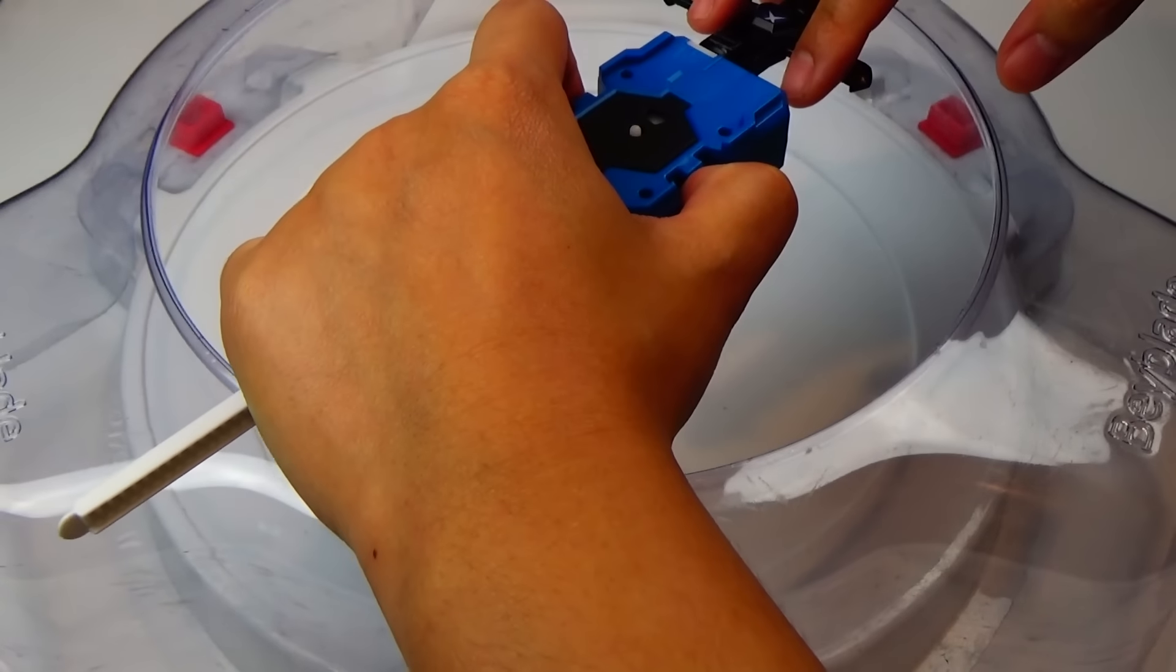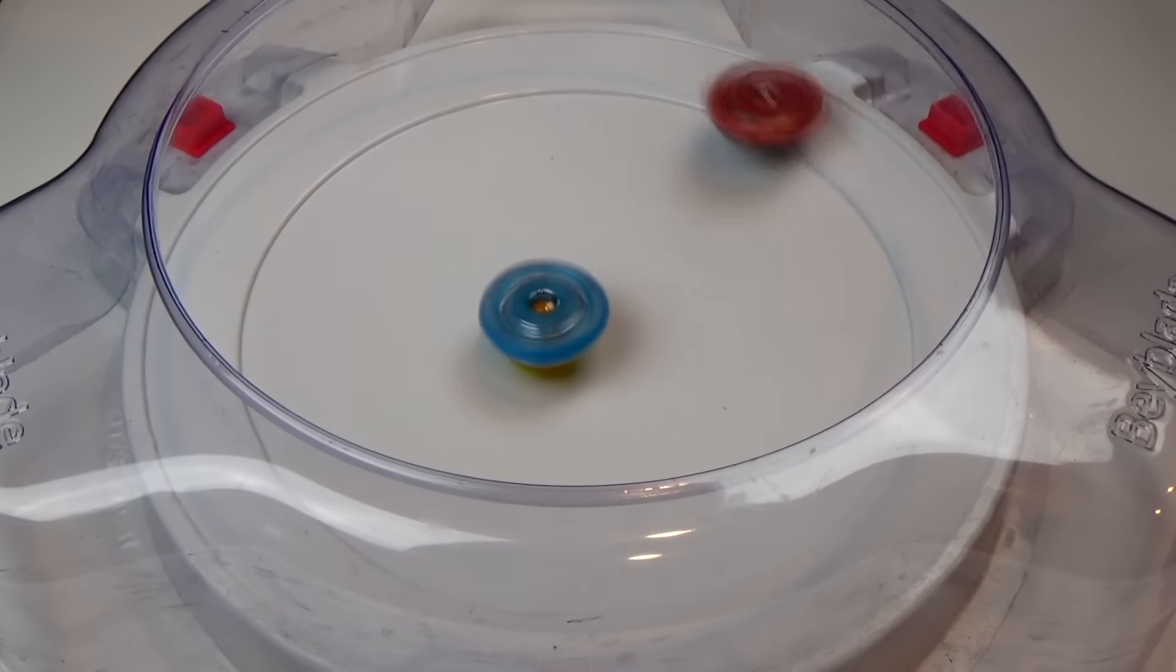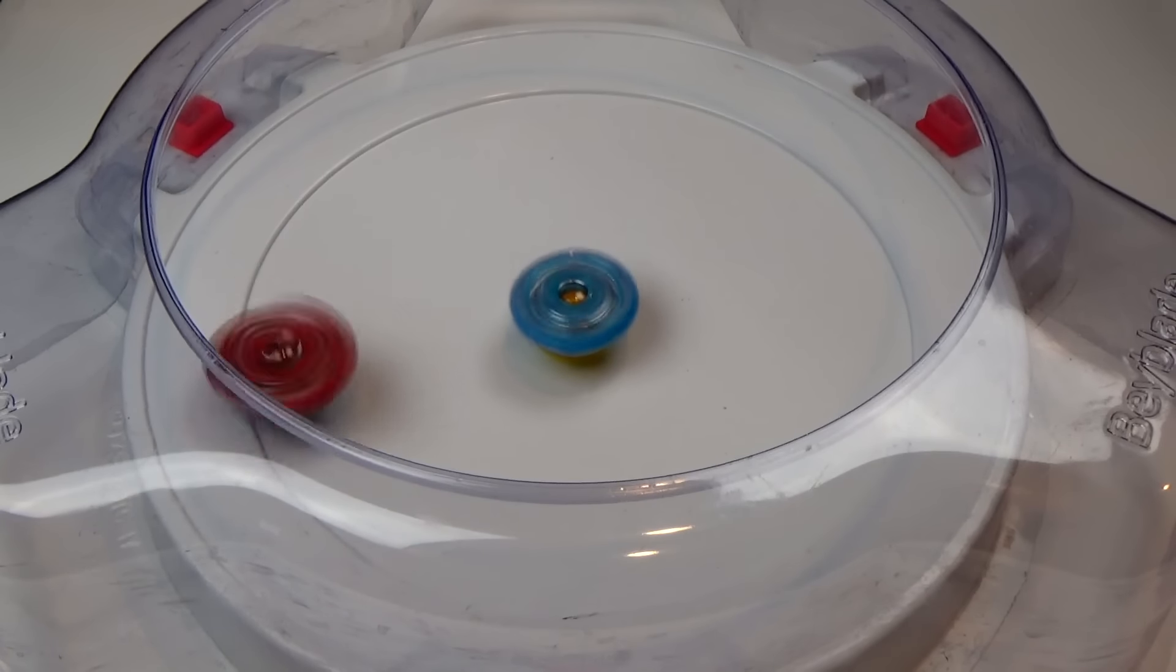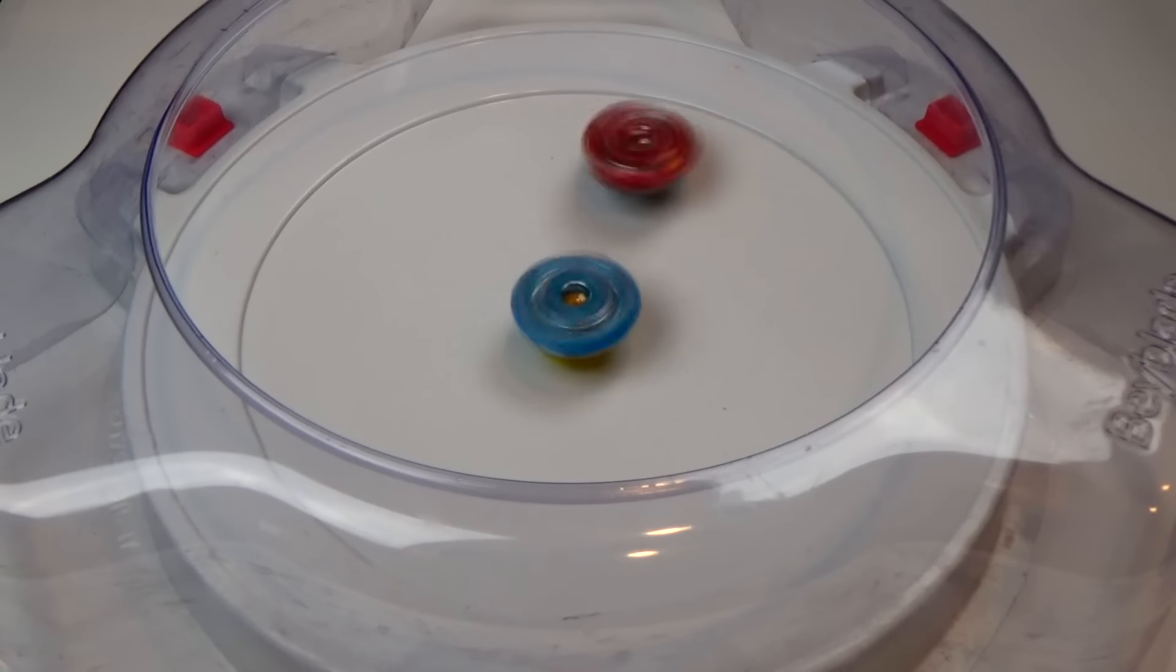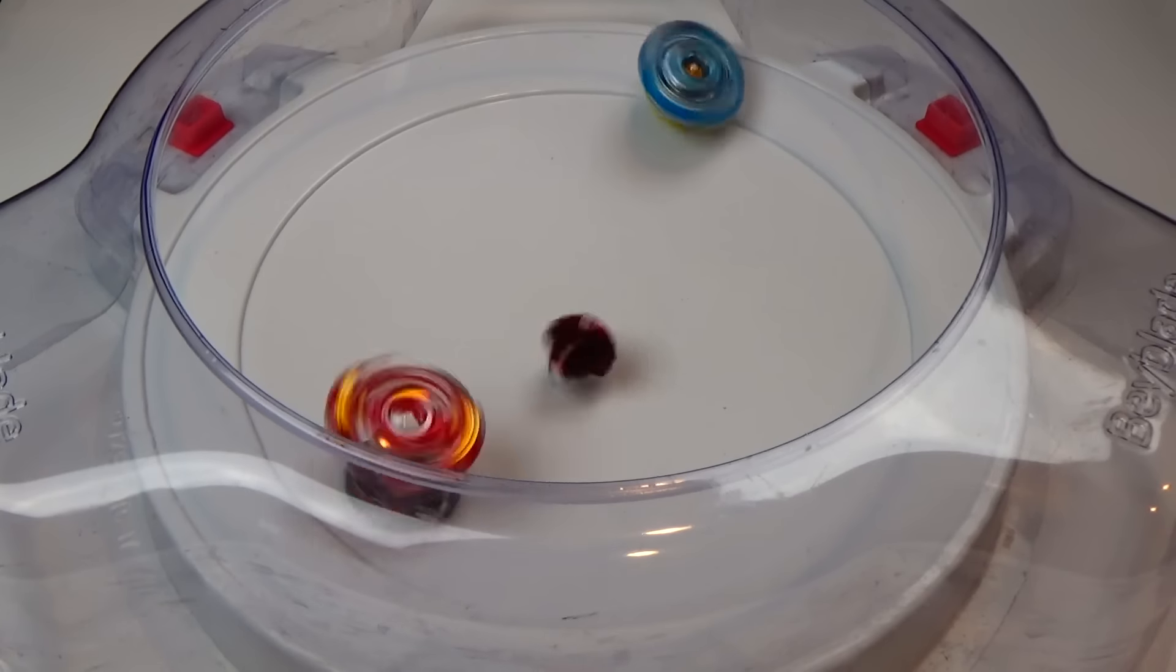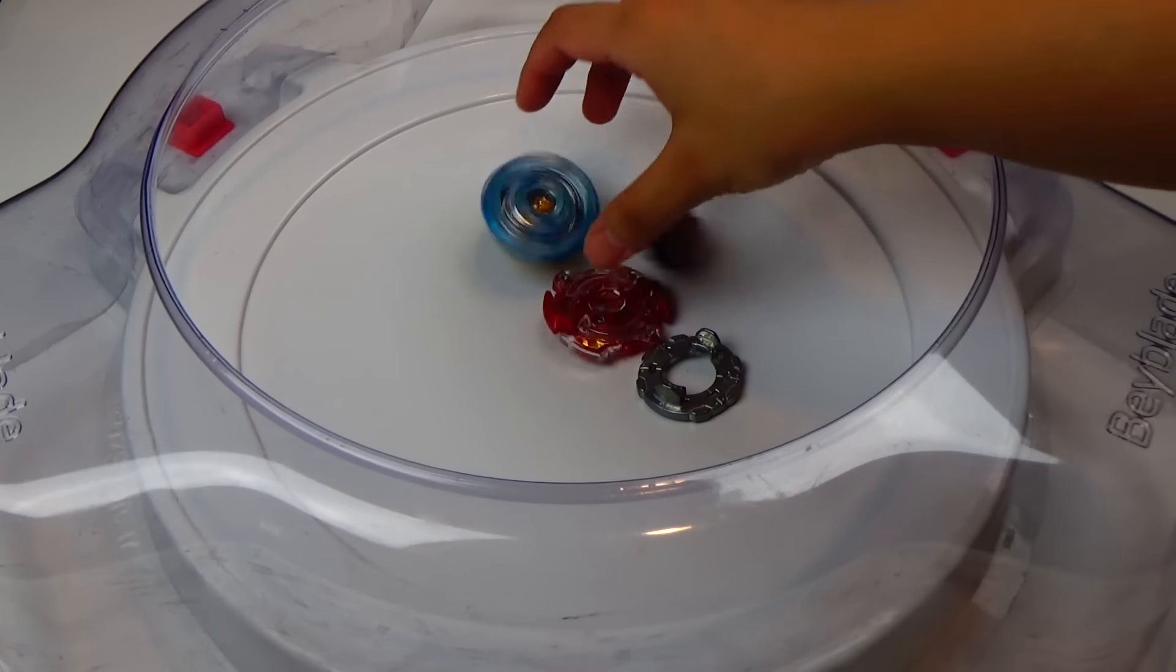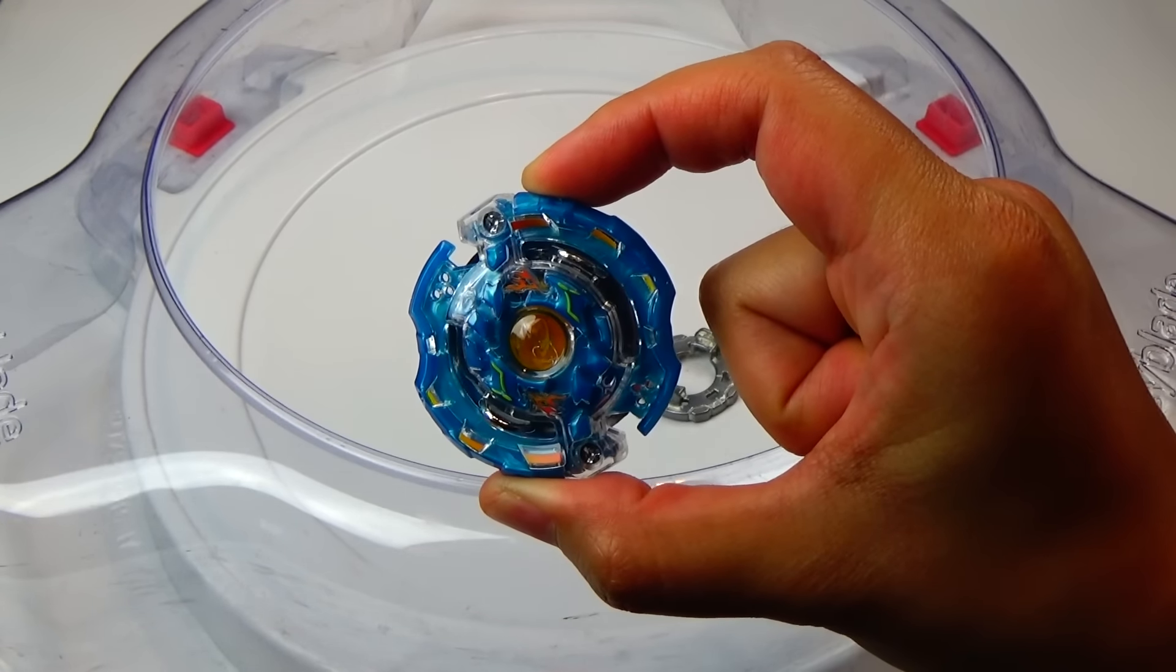Round four. Three, two, one, go shoot! Look at that Burst! Storm Spriggan, we're just going back and forward. Jade 2 gets two more points.